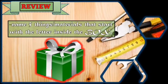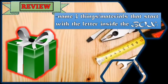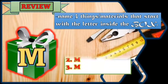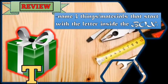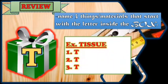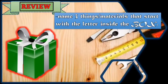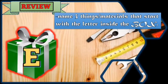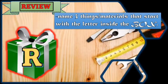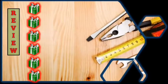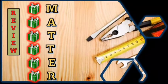So let's begin. The first letter in the box is letter M — for example, money. Next box is letter A — the example is alcohol. Next box is letter T — example, tissue. And then the next box is letter T again — example, textbook. Next box is letter E — example, eraser. And then the last box contains letter R — example is rubber shoes. To reveal all the letters inside the box, it will create what you call matter. So those materials or things are considered as matter. They are all matter.